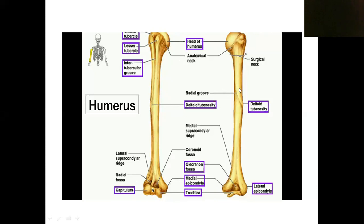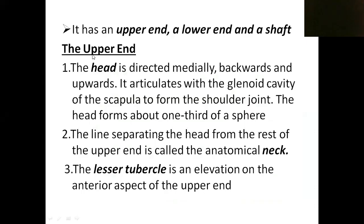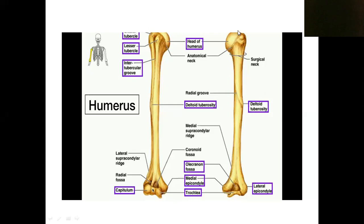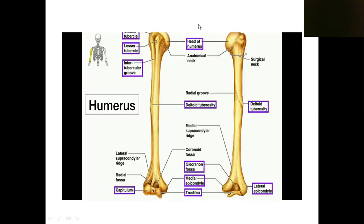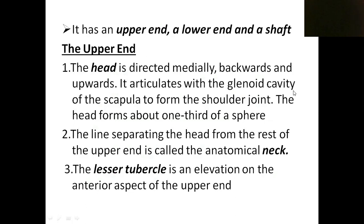First we will see the features of the upper end. The upper end has one rounded mass known as the head. The head directs medially, backward, and upward — toward the midline of the body and slightly upward and backward.